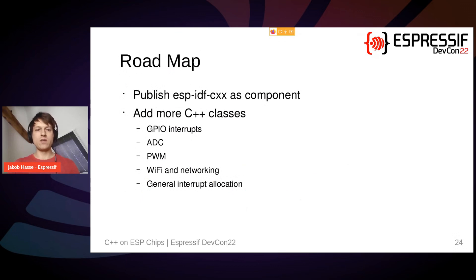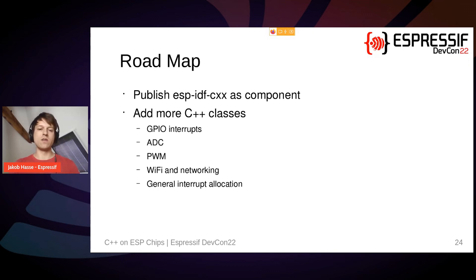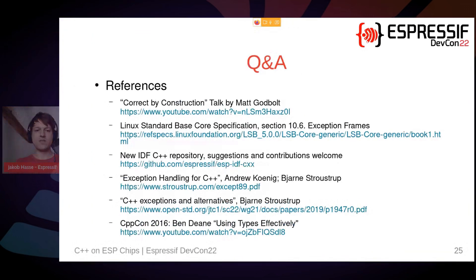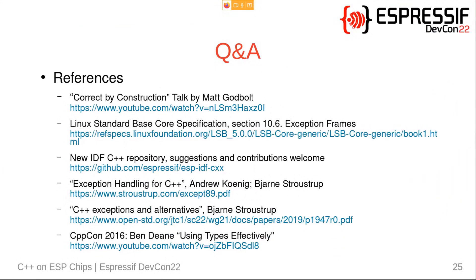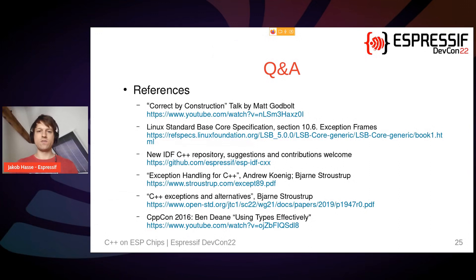Finally, the roadmap. We plan to publish the ESP-IDF CXX repository as a component for the IDF component manager. We furthermore want to add more C++ classes until we have a minimal set of covered use cases. We plan to add classes for GPIO interrupts, ADC, PWM, Wi-Fi networking, and possibly general interrupt allocation. If you find an important use case is missing, please let us know — we will consider adding more C++ classes. If you have any questions, please ask them now. We also have some references here for people who want to read further into these topics. Thanks for listening.